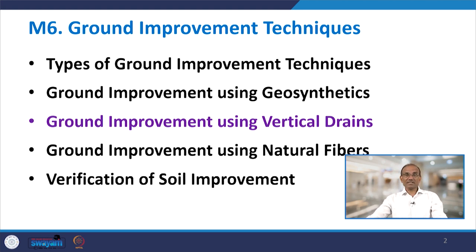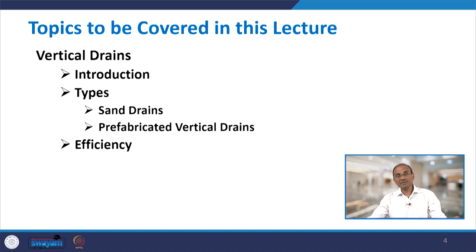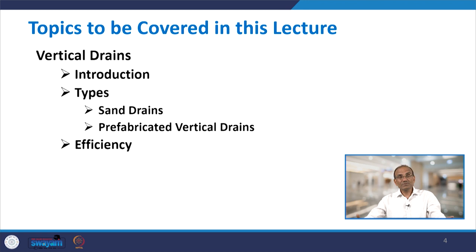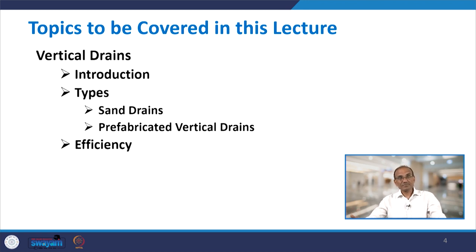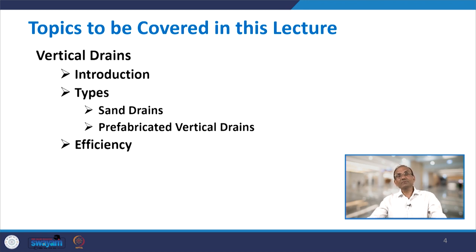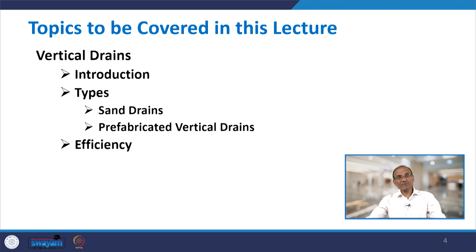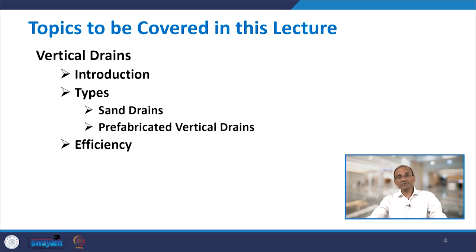In lectures 57 and 58 we will talk about vertical drains only. These are drains used for mitigation of liquefaction — you drain water out of the soil, and once drained, it helps in ground improvement, because many issues in soil are due to the presence of water. Vertical drains are popular for liquefaction mitigation. We will cover their introduction, two types — sand drains and prefabricated vertical drains (PVD) — and finally, the efficiency of these vertical drains.